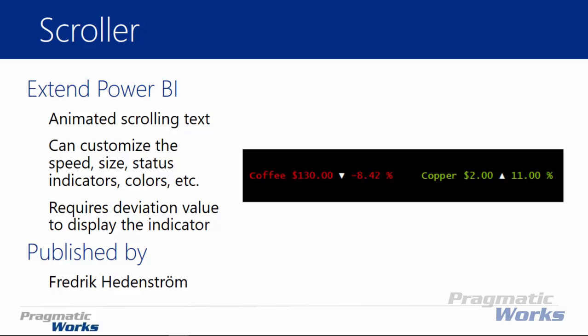It is an animated scroller — it changes values and shows what's displaying on screen. It is highly customizable: you can change the speed at which it scrolls, the size of the text, and the different status indicators. There are a couple of status indicators available, one being the actual color of the text, and the other being the arrow on screen. For example, coffee shows a down arrow indicating it is down in value, with a deviation of negative 8.42%, whereas copper is up 11%, indicated by color and arrow.